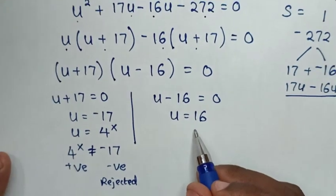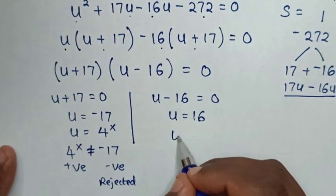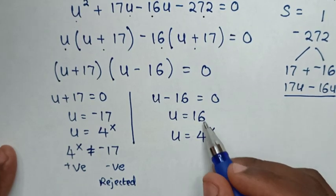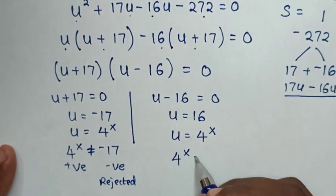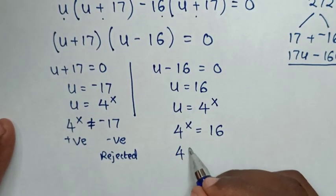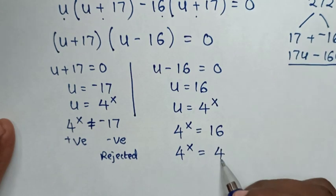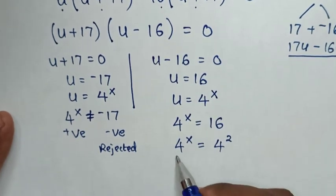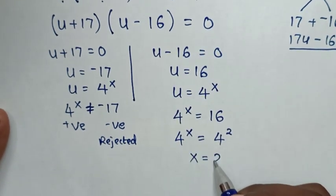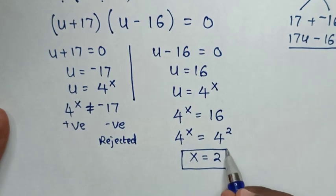Now solving the other solution: u equals 4 power x, so 4 power x equals 16. Since 16 is the same as 4 squared, we have 4 power x equals 4 squared. Because we have the same base, we compare the powers, giving x equals 2. Therefore, x equals 2 is the final answer.